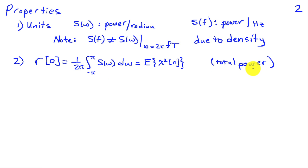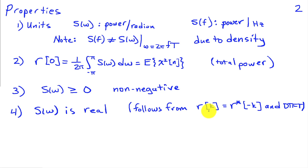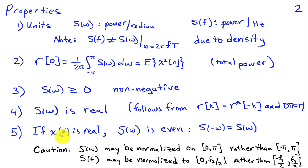When changing units from radians to hertz, we integrate from minus f_s over 2 to f_s over 2 and scale accordingly. Because this is a power, it must be non-negative. Also, because the correlation sequence is conjugate symmetric, the power spectrum must be real — a consequence of the symmetry properties of the discrete time Fourier transform. And if the process x of n is real, the power spectral density must be even: S of minus omega equals S of omega.